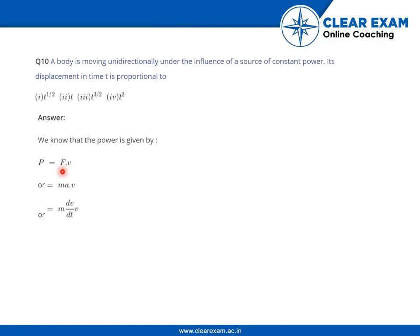In place of F, if we put ma, that means it is ma times v, or m dv/dt times v. Now, it is given that power is constant, thus m v dv/dt is constant.